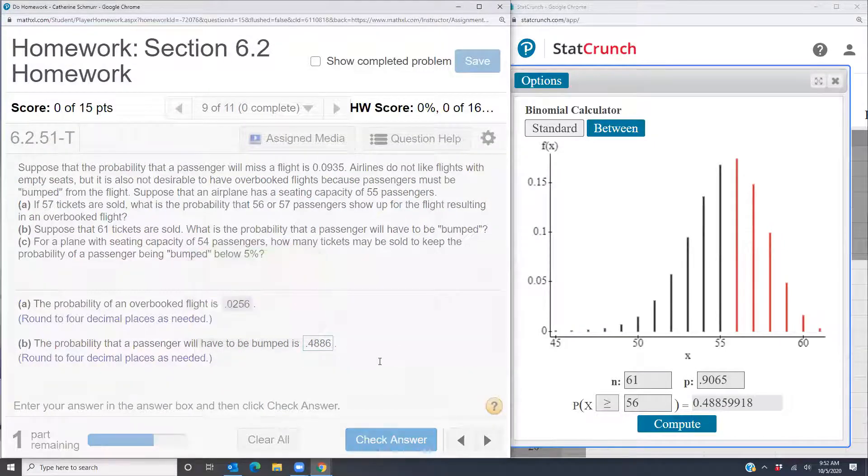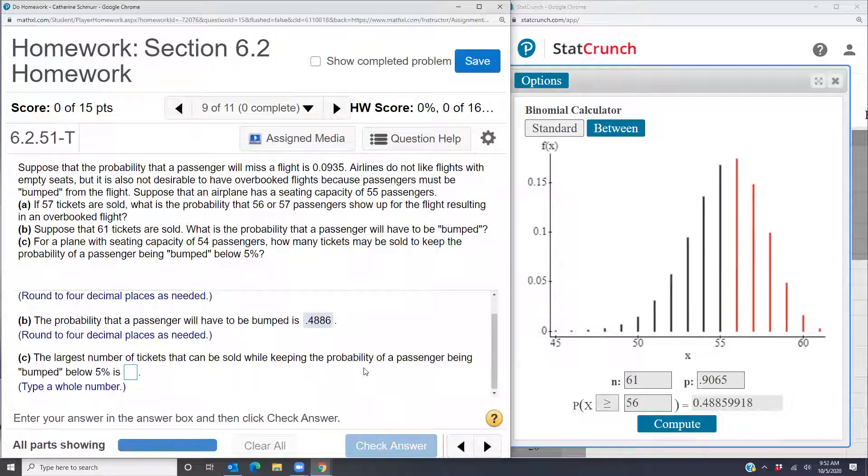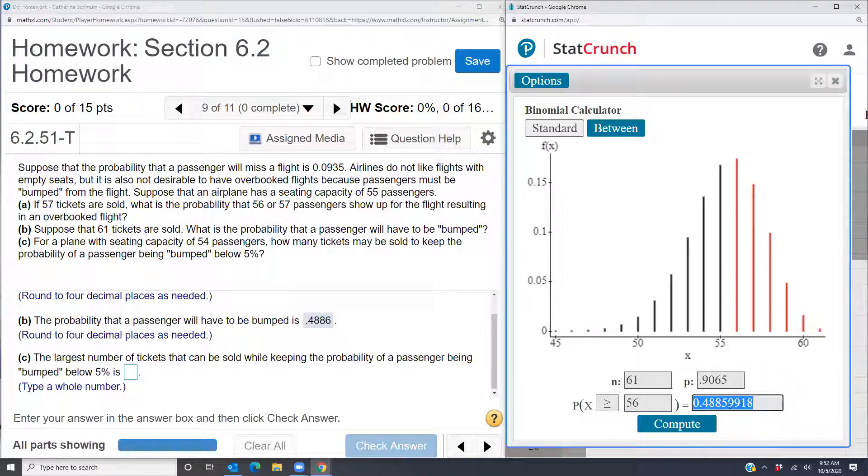And then part C says for a plane with seating capacity of 54 passengers, so now they're changing the seating capacity. How many tickets may be sold to keep the probability of a passenger being bumped below five percent? So in other words, we want this outcome here in our binomial distribution to be below five percent. And so we're going to have to do a little guessing here.